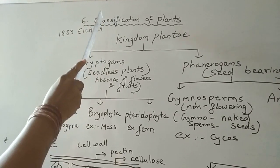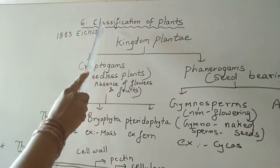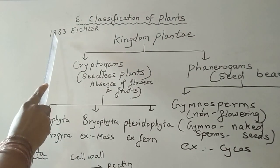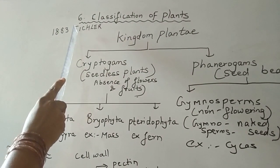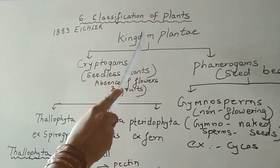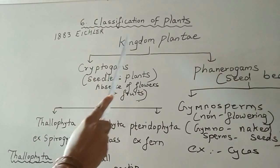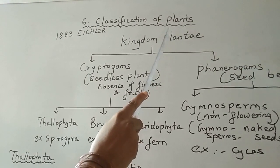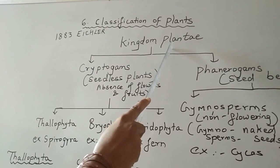Good morning students. Today we are going to study about the further topic of classification of plants. In 1883, a scientist Eichler gave a broad classification of kingdom plantae. There are a variety of plants available on the earth, so there is a need to classify the plants.